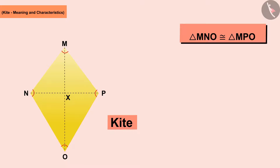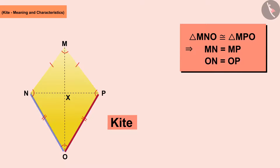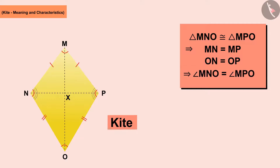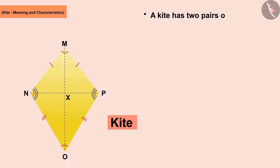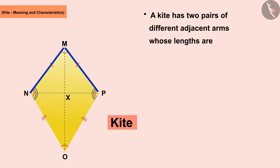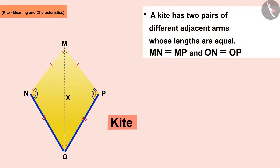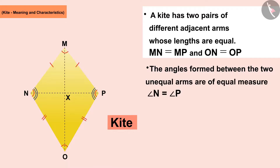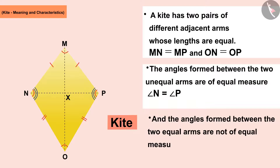So, a kite has two pairs of different adjacent sides, with the two sides of each pair mutually equal. The angles formed between the two unequal sides are of equal measure, while the angles formed between the two equal sides are not of equal measure.